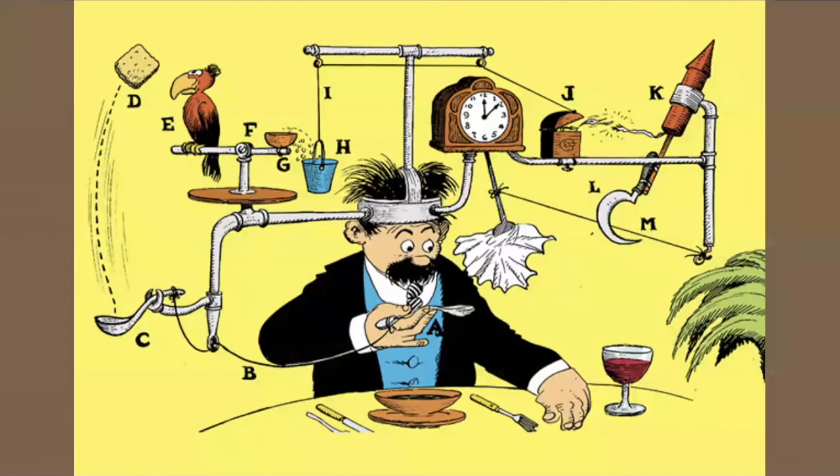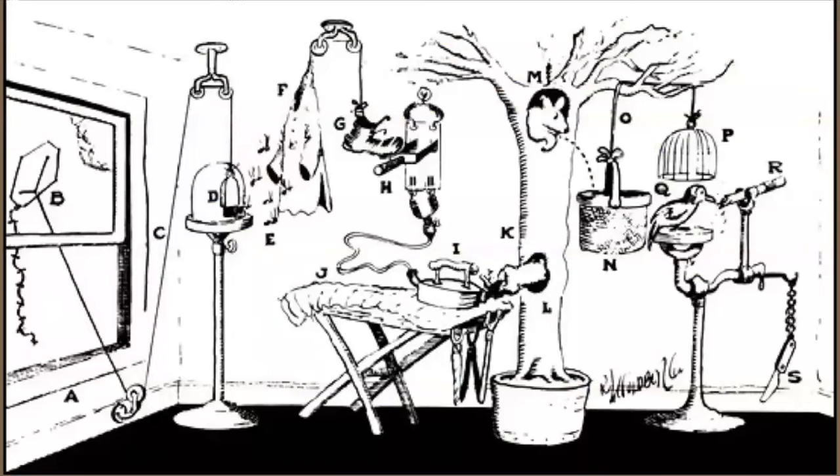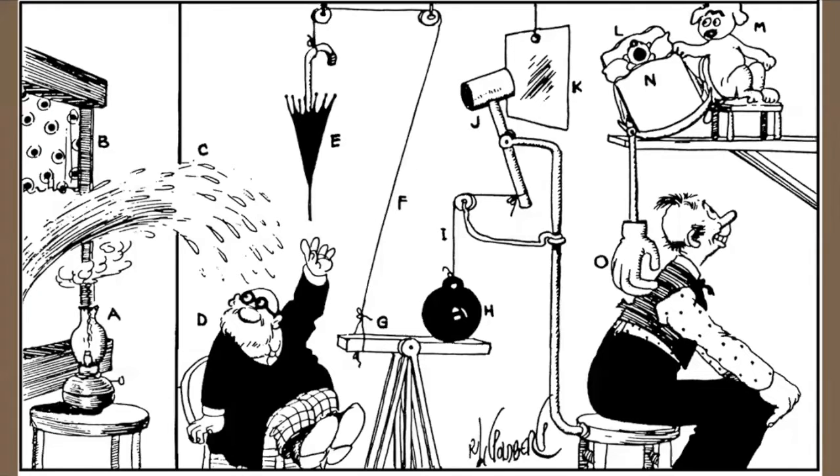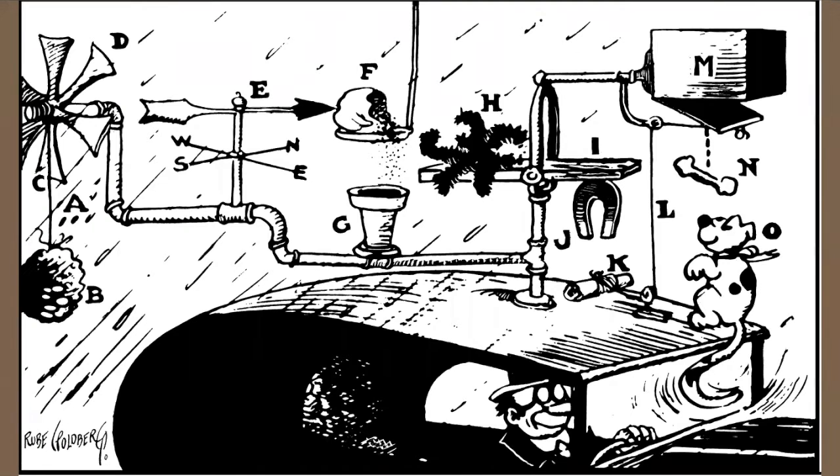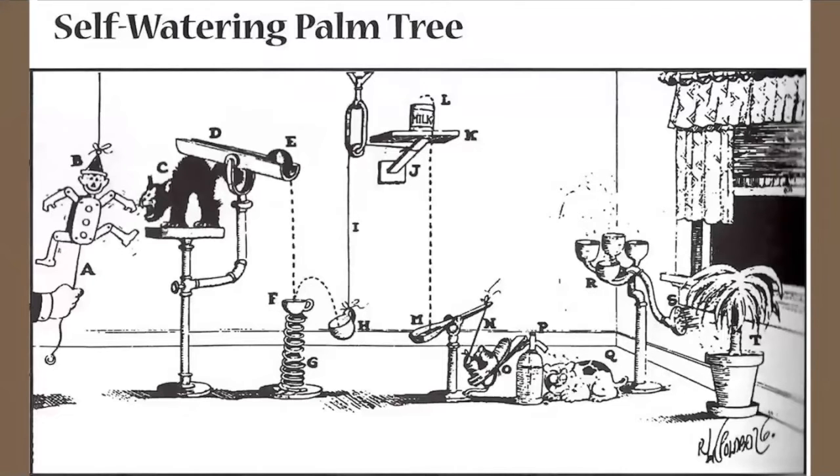Here are some of his pieces. This one is how to sharpen a pencil. This one is showing an automatic backscratcher idea. This one is actually a windshield wiper. And this one, which we'll be talking about, is a self-watering palm tree.